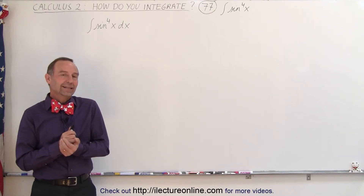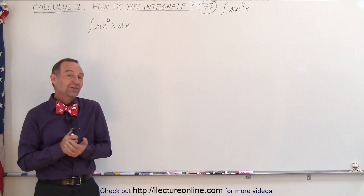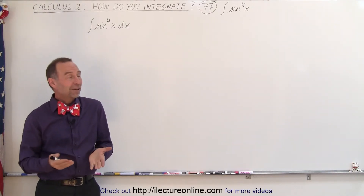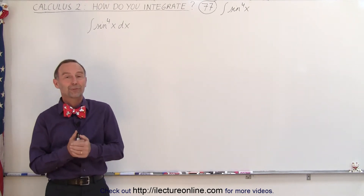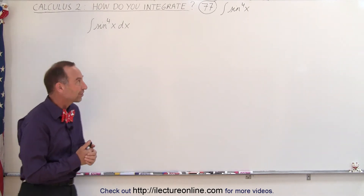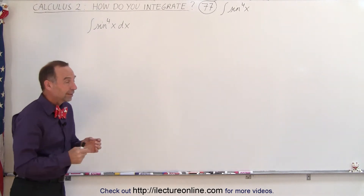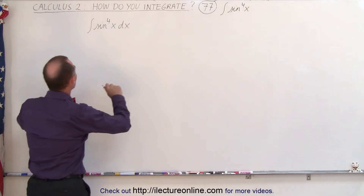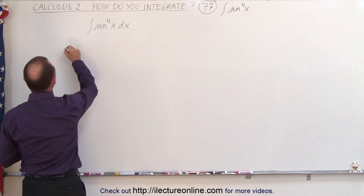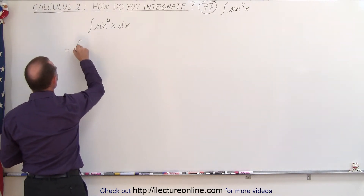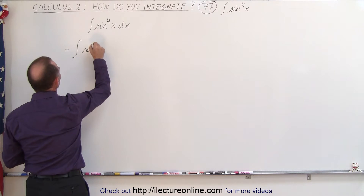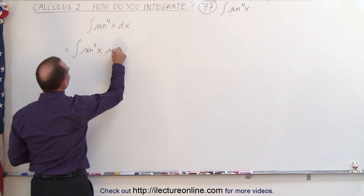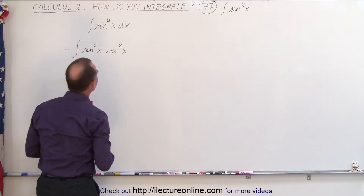Welcome to ElectronLine. We've done the sine squared of x and the sine cubed of x. Now let's try to do the sine to the fourth power of x. The thing to do there is to separate that into two — this is equal to the integral of sine squared of x times sine squared of x.